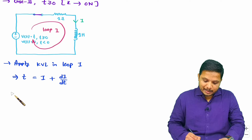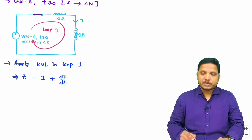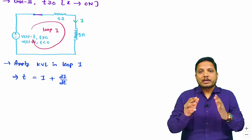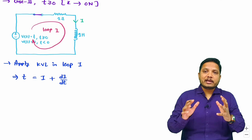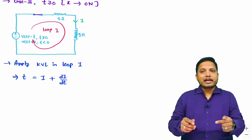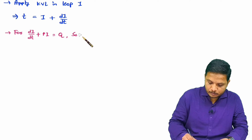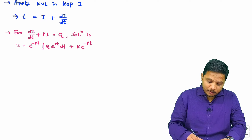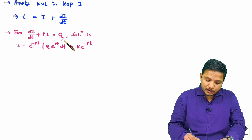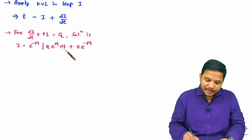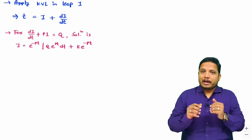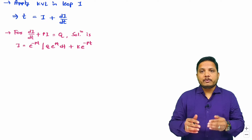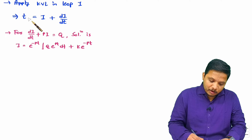We have this differential equation, and to solve it we should know the basic standard form. If we have di/dt + p·i = q, then the solution is i = e^(−pt) · [∫q·e^(pt) dt + k·e^(−pt)], where k is a constant. By using this basic solution we can solve this differential equation.